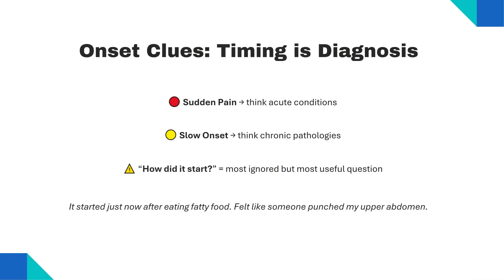The timing of onset can be diagnostic. Sudden pain is often due to acute events like perforation or obstruction, while gradual onset is more likely chronic or inflammatory pathology. Always ask: how did it start? This is often the most neglected yet most revealing question. For example: 'It started just now after eating fatty food, like someone punched my upper abdomen' — most probably biliary colic.